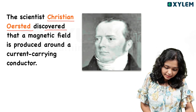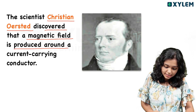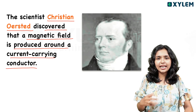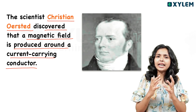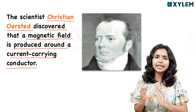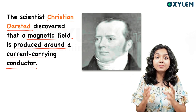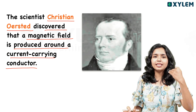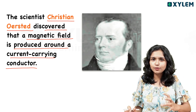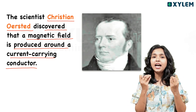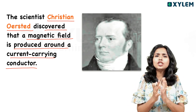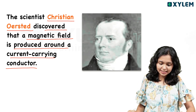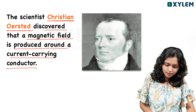The magnetic field is produced around a current-carrying conductor. When current is passing through the conductor, we call it a current-carrying conductor. It produces a magnetic field. This was proved by the scientist Hans Christian Oersted.